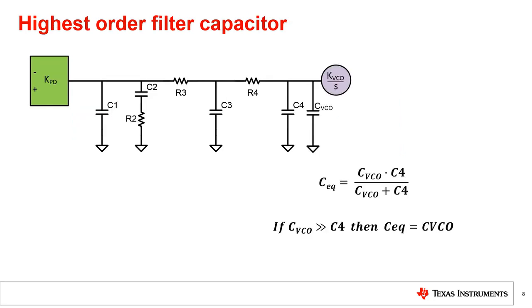When designing your loop filter, it is important to pay attention to the highest order capacitor. The highest order capacitor is a capacitor that adds in parallel with the VCO input capacitance, C_VCO. The VCO input capacitance is a capacitor to ground right at the input of the VCO. In a fourth order loop filter, C4 is the highest order capacitor. The minimum value needed for the highest order capacitor needs to make sure that the VCO input capacitance, C_VCO, does not dominate this value. What would be the highest order capacitor for a second order loop filter? If you picked C1, you are correct. Remember, the highest order capacitor must be in parallel with the VCO input capacitance.